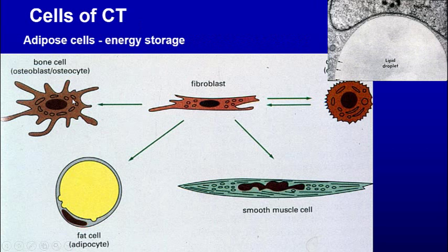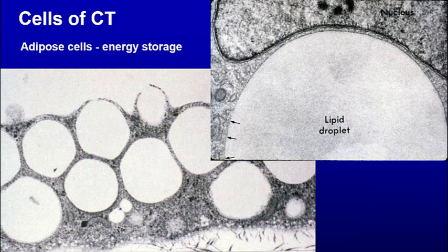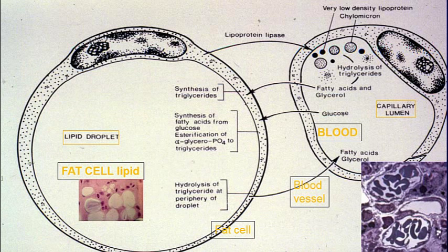The fibroblast can make different cells — it can make bone cells, smooth muscle, and fat cells, as well as the other ones we talked about. Here we can see smooth muscle, and here we see fat — lipid in through there. These are white fat deposits. Here we see a lipid droplet inside a fat cell, and then this is a capillary. So these are capillaries and these are fat cells, and you can see the exchange between the two.